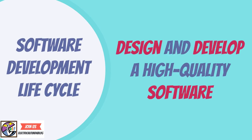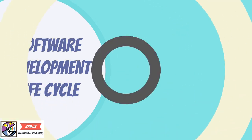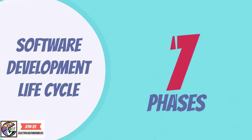SDLC consists of a detailed plan on how to develop, build, and enhance a specific software. There are seven phases in the Software Development Life Cycle.